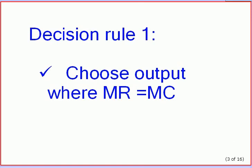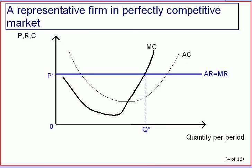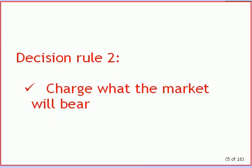The first part of our decision rule says: choose output where the marginal revenue curve is cut by the marginal cost curve from below. Following the rule, the profit maximizing output is equal to Q star. The second part of our decision rule states that we must charge what the market will bear for this optimal output, and what the market will bear is given by the average revenue curve.